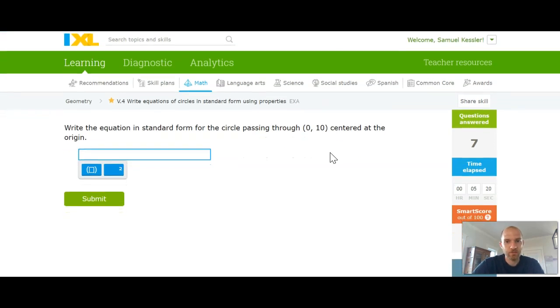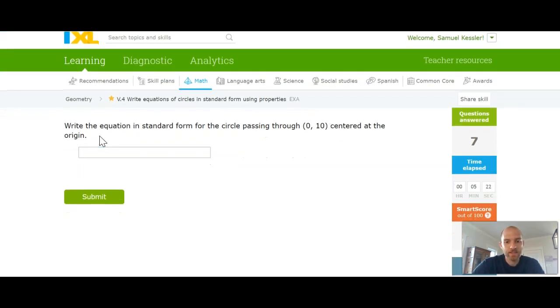And iXL will take that if you type that in. So this one, again, is centered at the origin. So it's going to be x squared plus y squared is equal to... It goes from 0, 0 to 0, 10 on the y-axis. That is a radius of 10. 10 squared is 100.